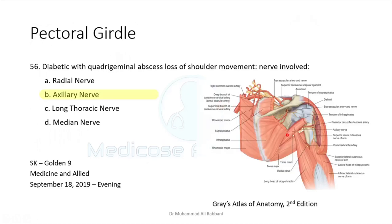This is one of the most frequently asked questions. The quadrilateral space is bounded by teres major below, teres minor above, subscapularis medially, humerus laterally, and the long head of triceps. It contains the posterior circumflex humeral artery and axillary nerve. This question is also asked in the clinical scenario of downward dislocation of the shoulder joint, where both structures get stretched. The artery is also asked in some MCQs.